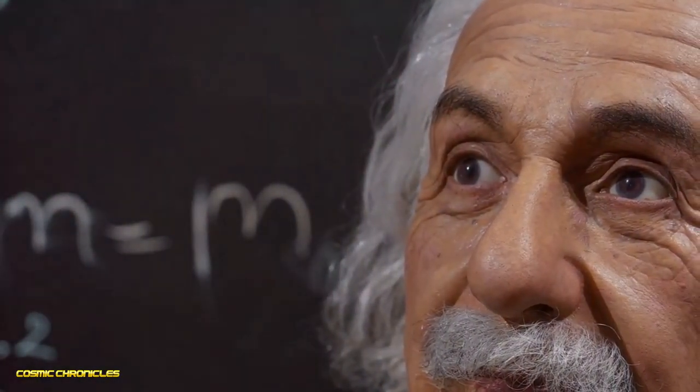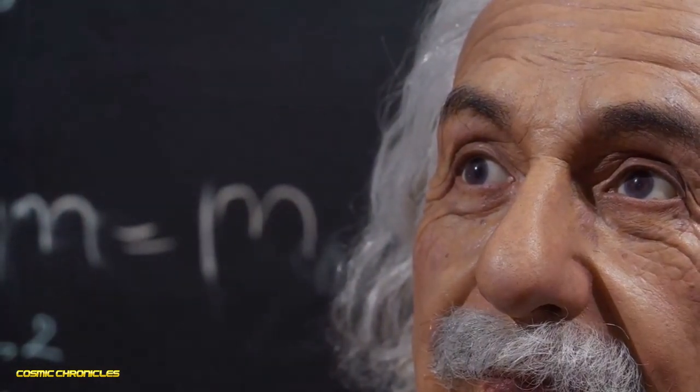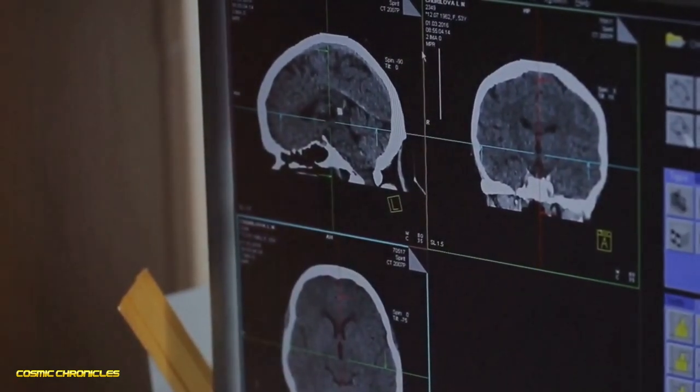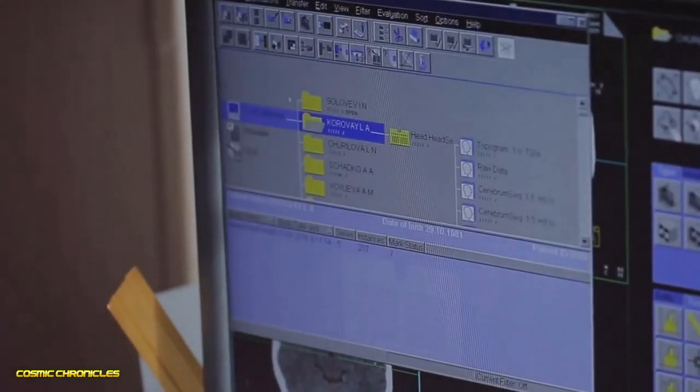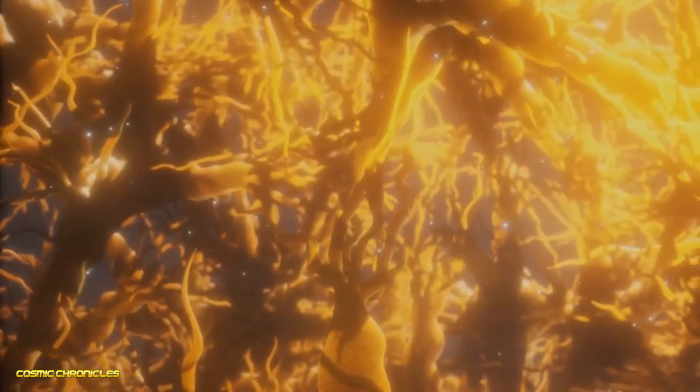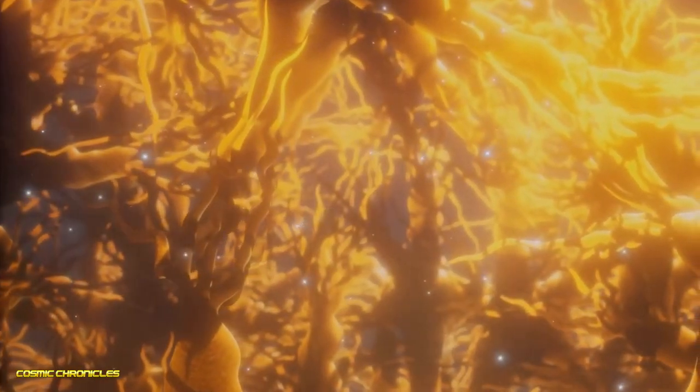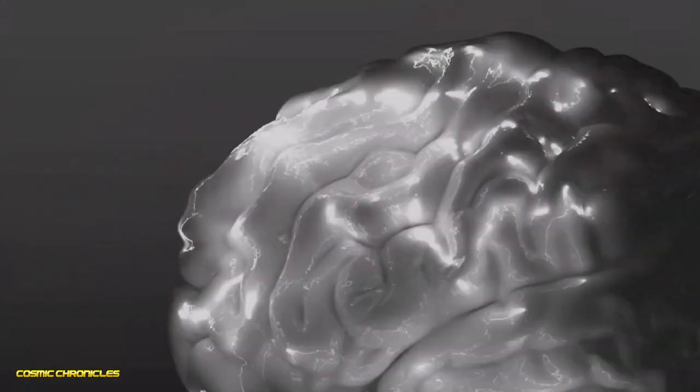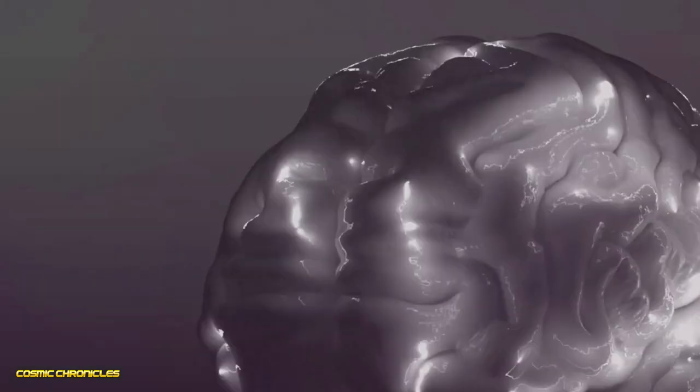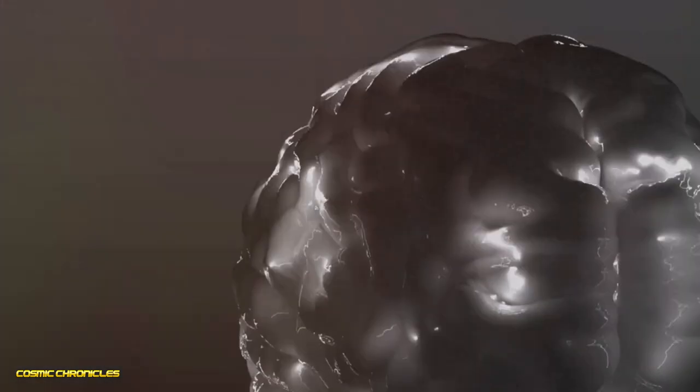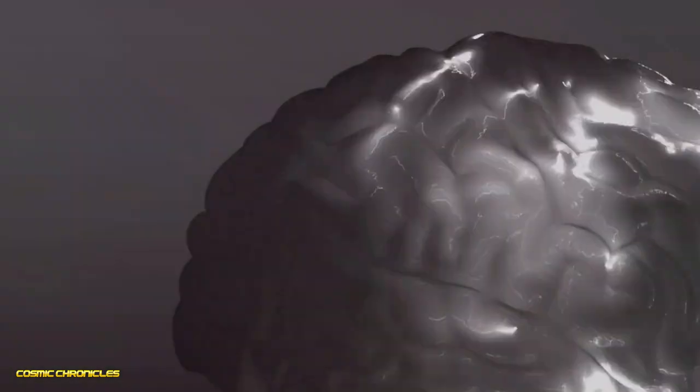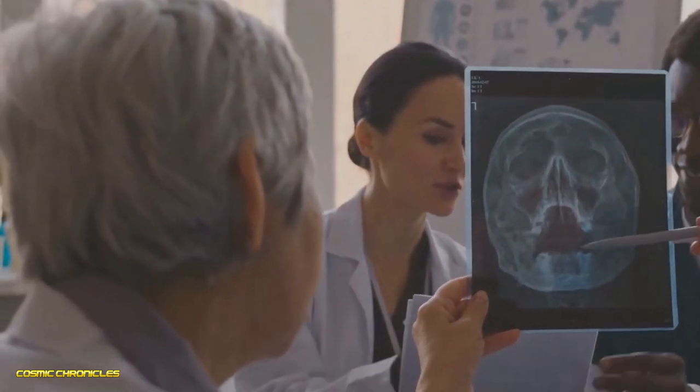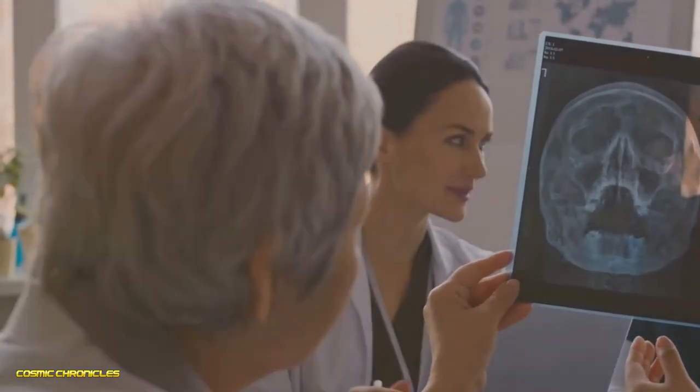There is also speculation that Einstein's brain itself may have contributed to his intelligence. Studies of his brain have revealed that he had a higher number of glial cells in certain areas compared to the average person. Glial cells support neurons by providing nutrients, helping with signal transmission and assisting in brain function. Einstein's brain was particularly rich in glial cells in the left inferior parietal area, which is crucial for combining information from different parts of the brain. While this might suggest that Einstein's brain was unique, it's difficult to draw concrete conclusions from such a small sample size.